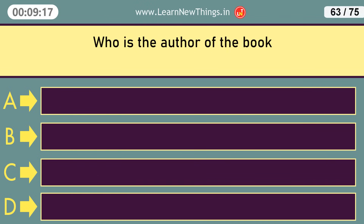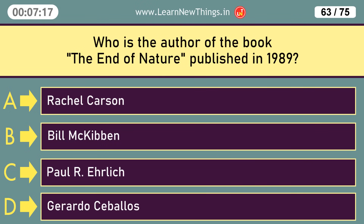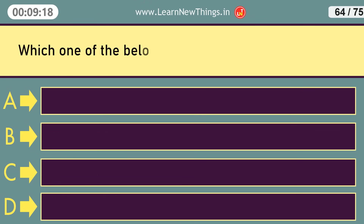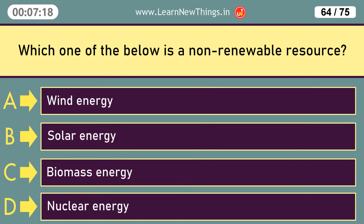Who is the author of the book The End of Nature published in 1989? Bill McKibben. Which one of the below is a non-renewable resource? Nuclear energy.